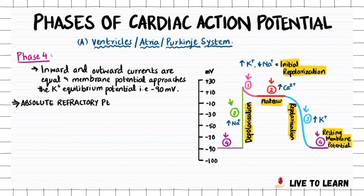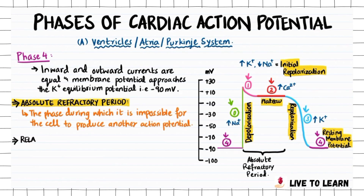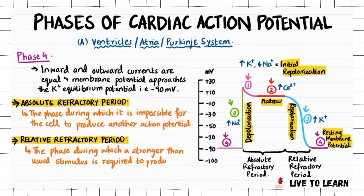Let's take a look at what the absolute and relative refractory periods are. The absolute refractory period starts from the beginning of phase 0 until halfway through phase 3, and it is the phase during which it is impossible for the cell to produce another action potential. The relative refractory period starts from halfway through phase 3 till the end of phase 3 — it is the phase during which a stronger than usual stimulus is required to produce another action potential.